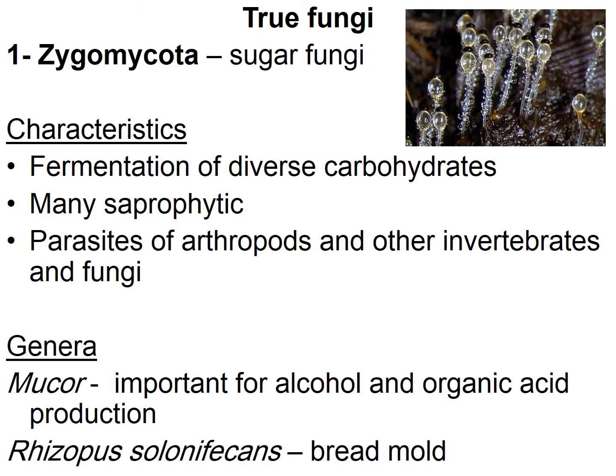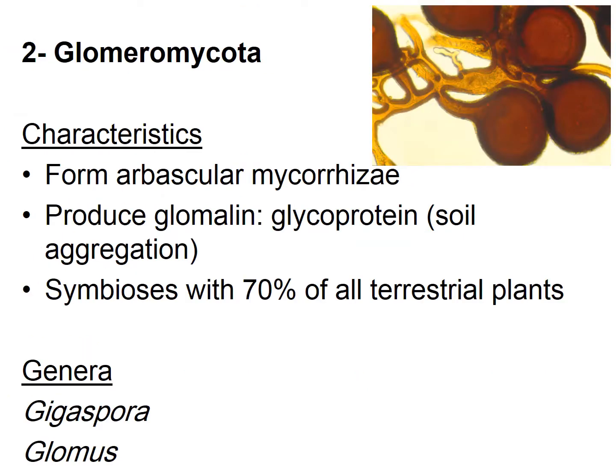The Zygomycota — the zygomycetes — are called the sugar fungi. They can ferment a diverse wide range of carbohydrates, and many live saprophytically, while some are parasites on arthropods and other invertebrates. An example is Mucor, which is important in alcohol and organic acid production. Most people have noticed the bread mold — that is Rhizopus stolonifer — so these are called the sugar fungi or the zygomycetes.